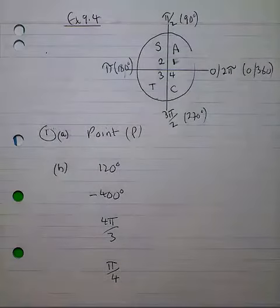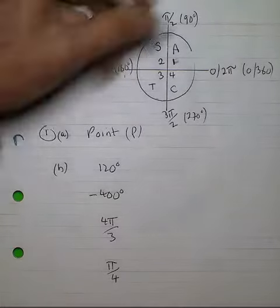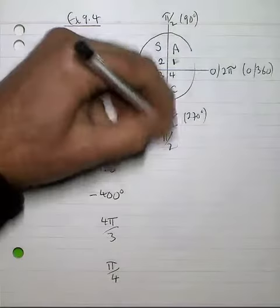Now in question 1a, you're asked to identify or give a trig ratio using radian measure of point R, which lies on the boundary between quadrants 1 and 2. That's clearly π over 2.